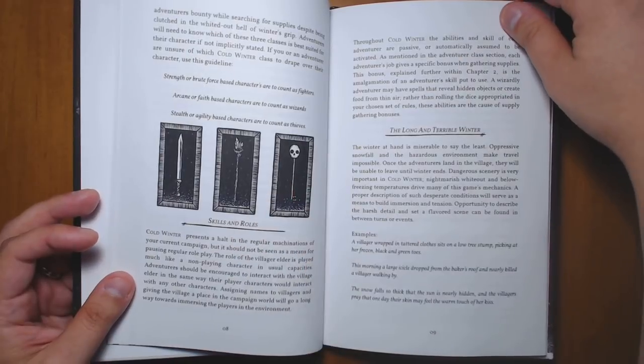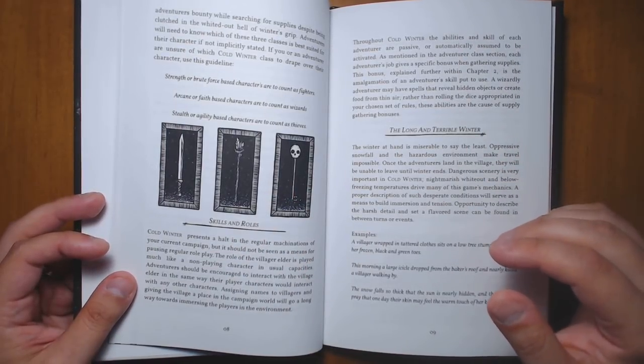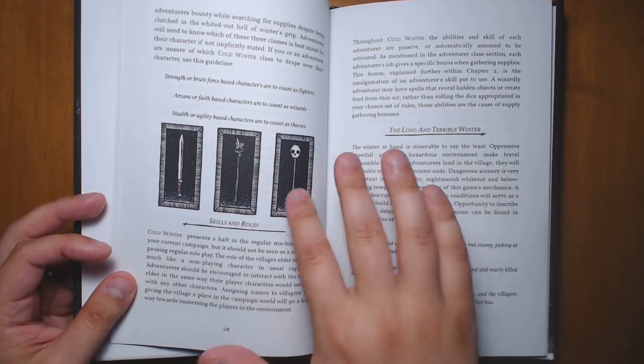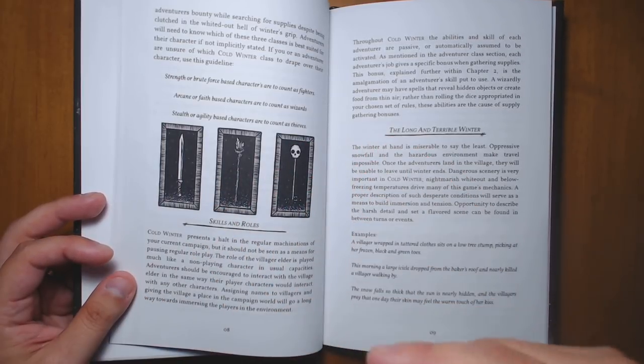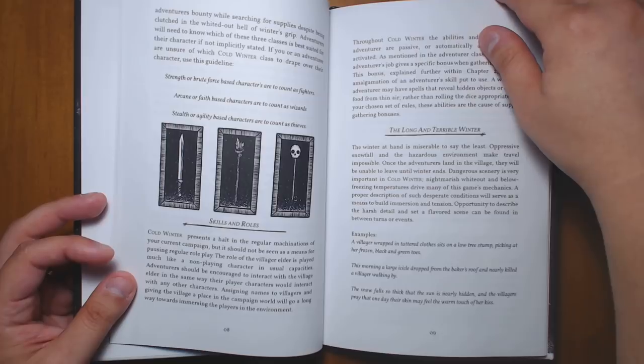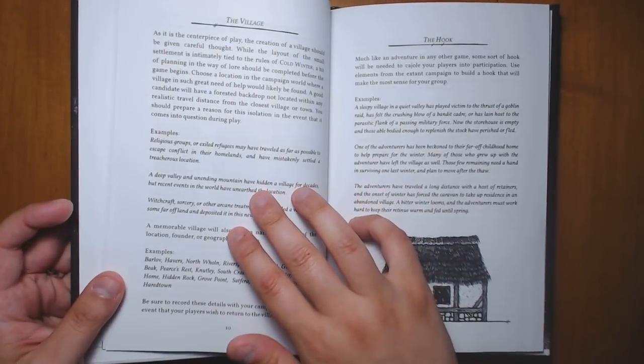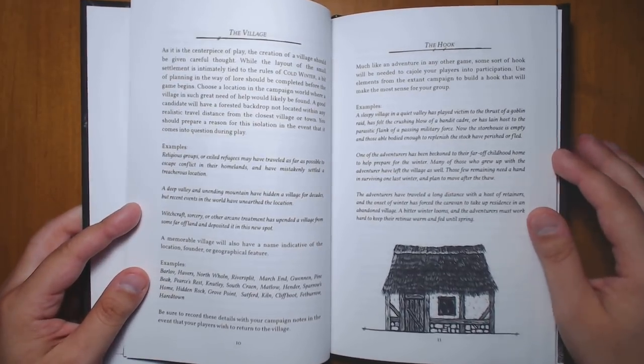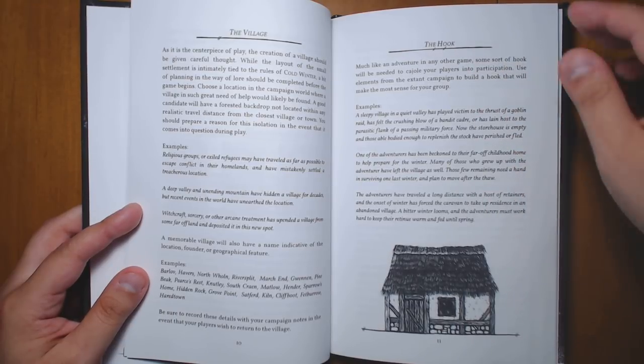So basically the idea is that it works for any fantasy role-playing game. As long as you have characters that can roughly fit into magic, fighting, and thievery, you just sort of sort them into those three categories. Because those are the roles that they're going to be taking on while playing out this session. There are some good examples of how you can set this up, depending on the campaign that you're in, the type of village that it's going to be, like good names for it, some possible hooks that you can use to lure the players in.